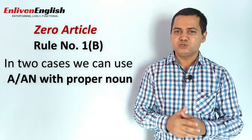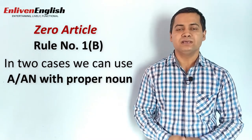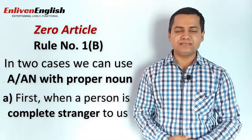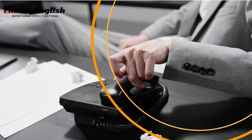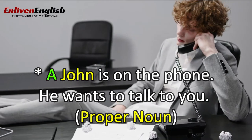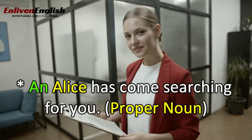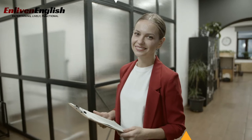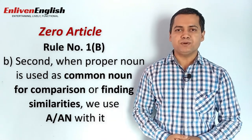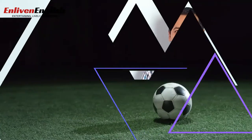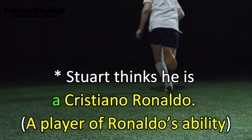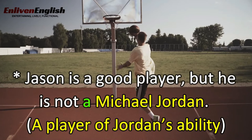But there are a few exceptions. In two cases, we can use the article A or AN with a proper noun such as a name. First, when a person is a complete stranger and we want to show we have no idea who we are talking about. For example: A John is on the phone — he wants to talk to you. A Mr. Gates wants to meet you. An Alice has come searching for you. Second, when we use a proper noun as a common noun for comparison, we use the indefinite article. As in: Stuart thinks he is a Cristiano Ronaldo. Jason is a good player, but he is not a Michael Jordan.